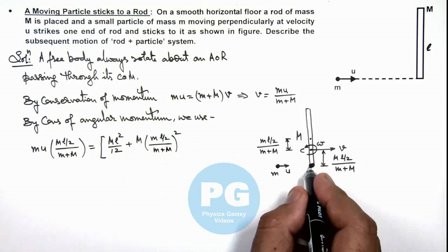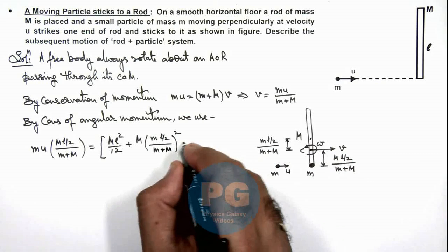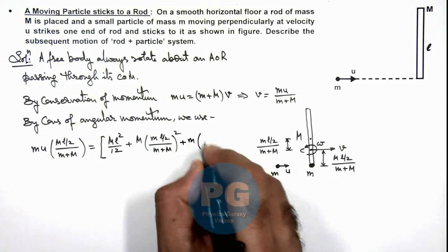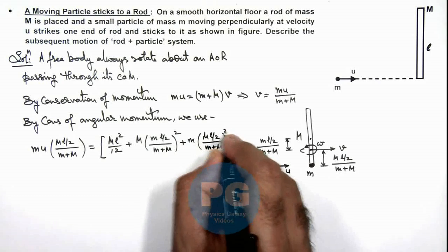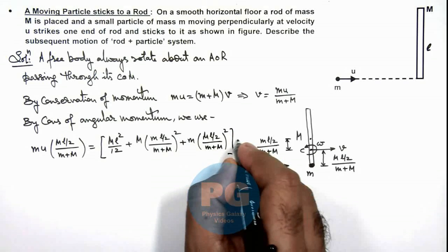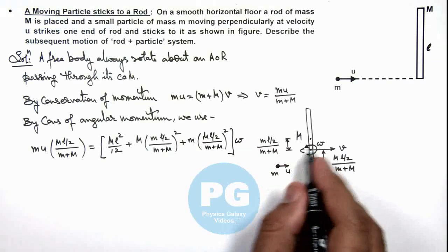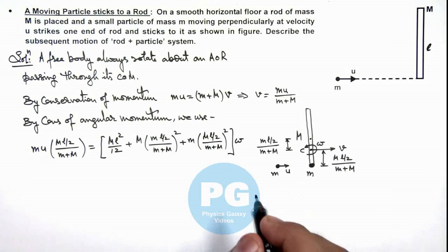And for the point mass we can simply write mr², so this is m times [(Ml/2)/(m+M)]² multiplied by omega, if it is rotating about center of mass at angular speed omega.